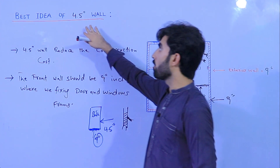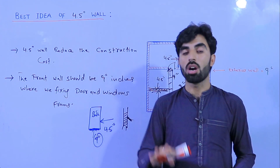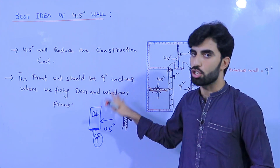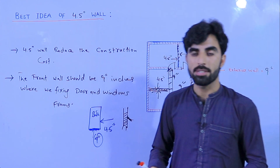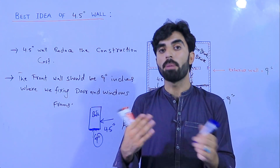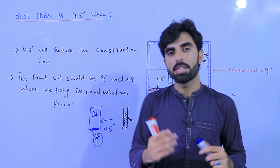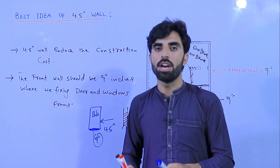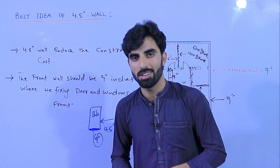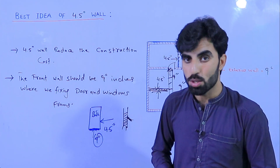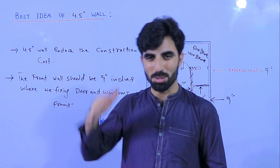So this is the important topic we discussed: the best idea of 4.5 inch wall. It can reduce the construction cost of the project. Exterior walls and front walls, and walls where you are fixing pipes for sanitary work, should be 9 inches. But partition walls should be 4.5 inches to reduce construction cost. Thanks for watching, see you in the next video. Goodbye.